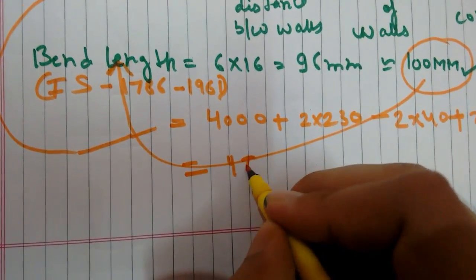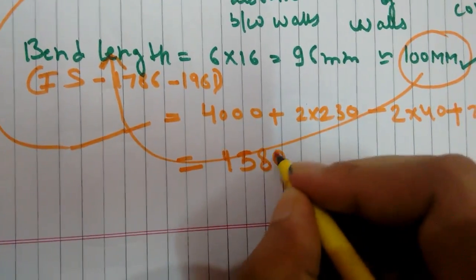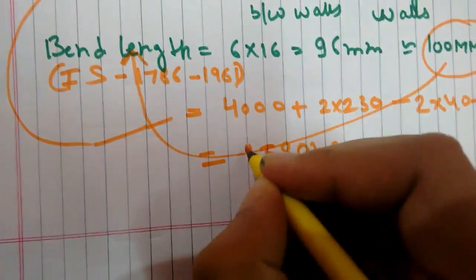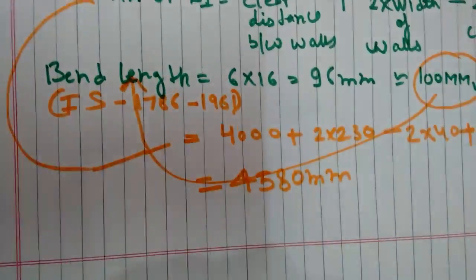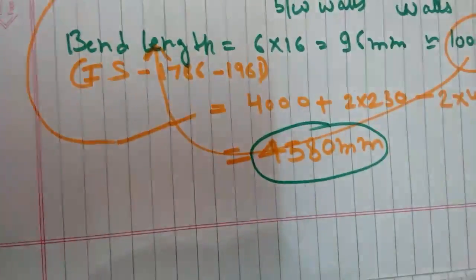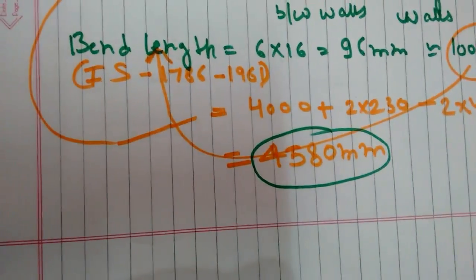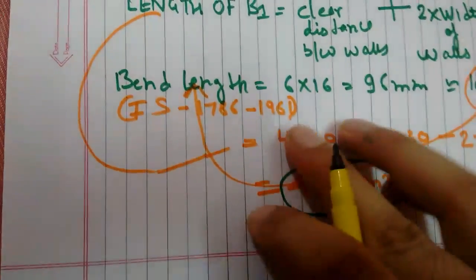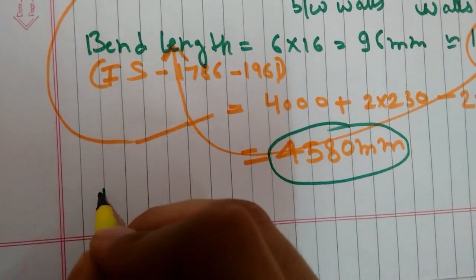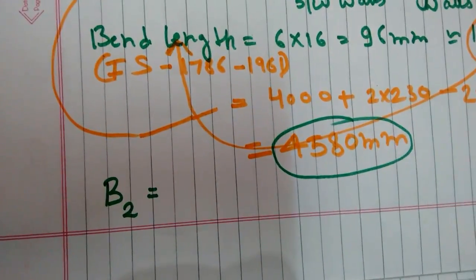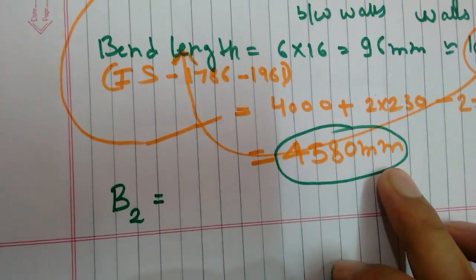So this is the value that comes out to be for the length of B1. Now for length of bar B2, we have to calculate. For B2 we will calculate, if you see the shape of this.